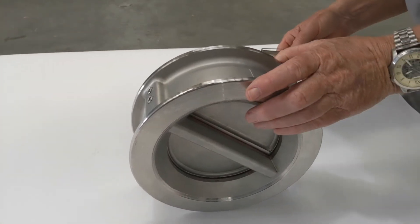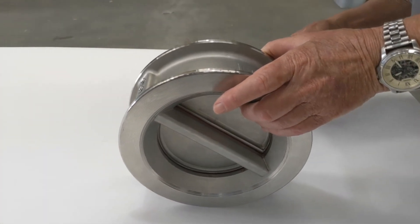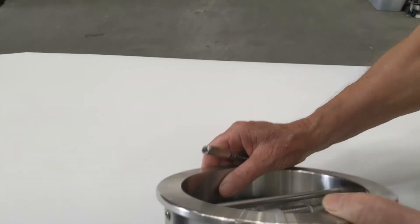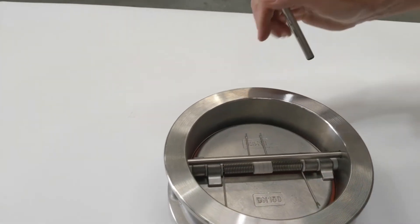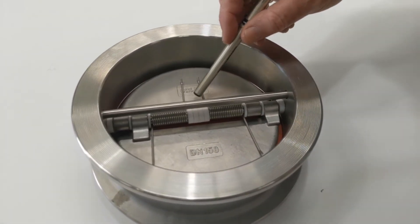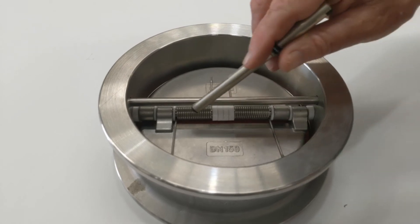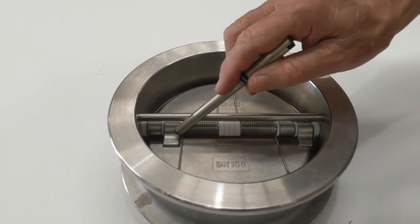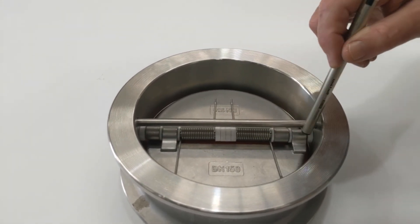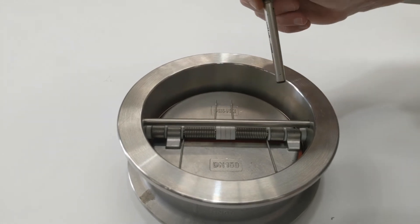What about the disc? Investment cast 316 and the spring is also a 316 stainless steel spring inside here. The little seats inside of the actual bushes are all Teflon, the pivot bushes and through there.